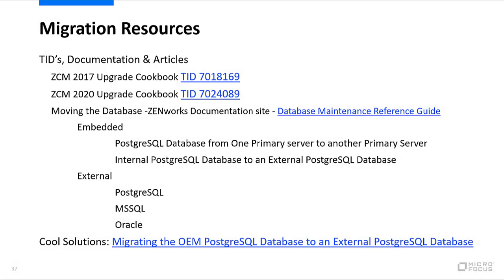Warning: reverting the database from PostgreSQL to its original backs up the PostgreSQL database, but any data captured in between will be lost. For migration resources, the ZCM 2017 upgrade cookbook is TID 7018169 and the ZCM 2020 upgrade cookbook is TID 7024089. The database maintenance reference guide covers moving the database between servers or changing from Oracle to MS SQL or other supported platforms.